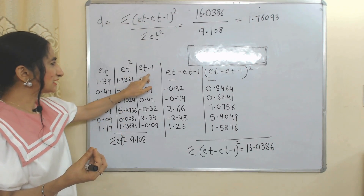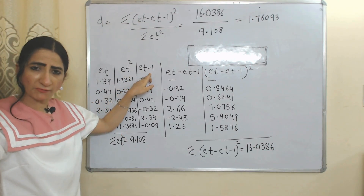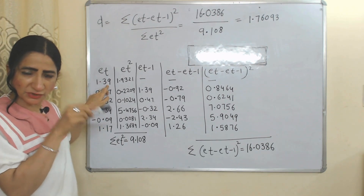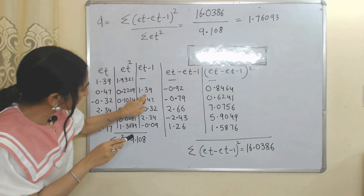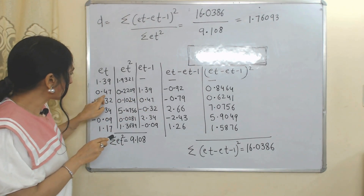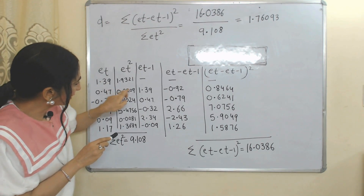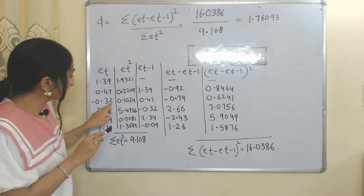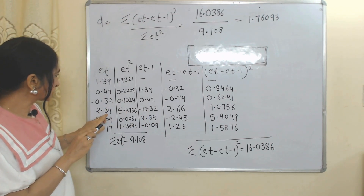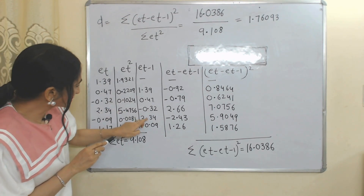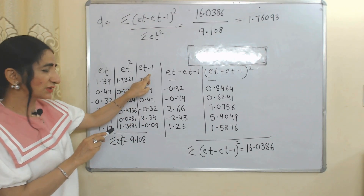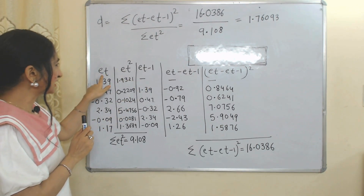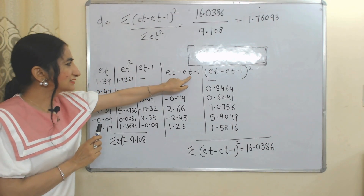Now we will calculate e_{t-1}, which is the previous year's error term. The first value of e_t becomes the second value of e_{t-1}. Similarly, 0.47 is the second value of e_t but becomes the third value in e_{t-1}. Likewise, -0.32 is the third value of e_t but becomes the fourth value of e_{t-1}. This pattern continues because e_{t-1} is the previous period's error term.